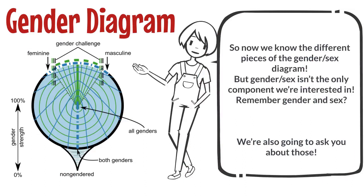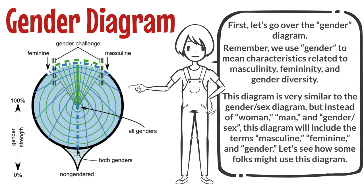So now we know the different pieces of the gender sex diagram, but gender sex isn't the only component we're interested in. Remember gender and sex? We're also going to ask you about those. First, let's go over the gender diagram. We use gender to mean characteristics related to masculinity, femininity, and gender diversity. This diagram is very similar to the gender sex diagram, but instead of woman, man, and gender sex, this diagram will include the terms masculine, feminine, and gender.